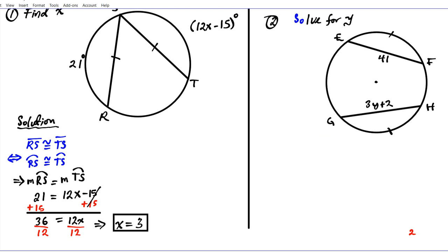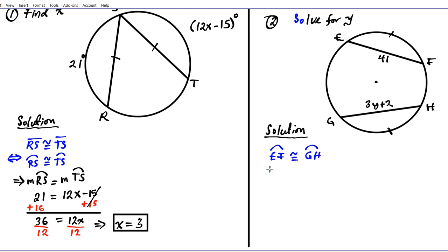For question two we use the reverse direction: we now have congruent arcs and use that to find a variable associated with one of the corresponding chords. We're given that arc EF is congruent to arc GH. By the theorem, this is the case if and only if chord EF is congruent to chord GH.